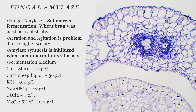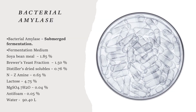Magnesium chloride plus water 0.2g per litre. Production of bacterial amylase: The method of submerged fermentation is used and the fermentation medium contains soyabean meal 1.85%, Beaverlac fraction 1.50%, distiller's dried solubles 0.76%, N-Z amine 0.65%, lactose 4.75%, magnesium sulfate plus water 0.04%, antifoam 0.05%, and water.